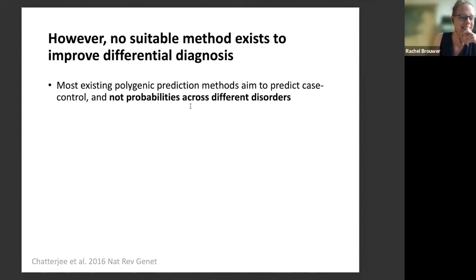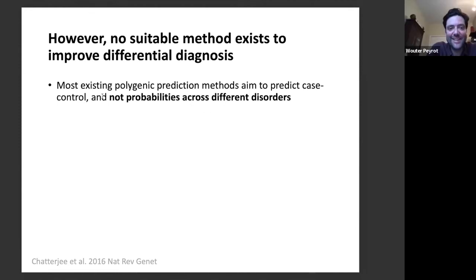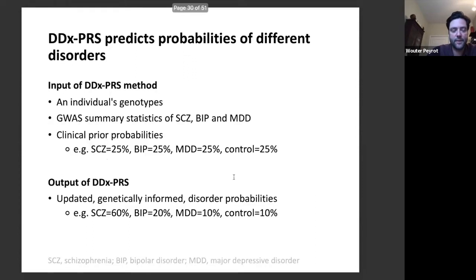Most prediction methods look at the case-control difference and not probabilities across different disorders. That's why we developed our new method, DDX-PRS, to distinguish different psychiatric disorders based on polygenic prediction. In brief, the input is an individual's genotype data along with GWAS summary statistics for schizophrenia, bipolar disorder, and MDD, plus a clinical prior probability. Throughout the talk, I assume a clinical prior of 25% for each of schizophrenia, bipolar, MDD, and healthy control.